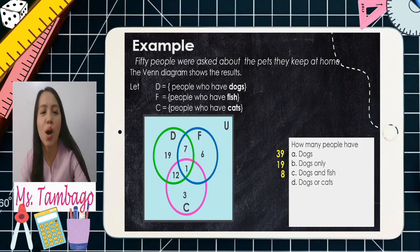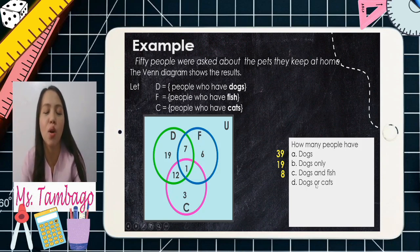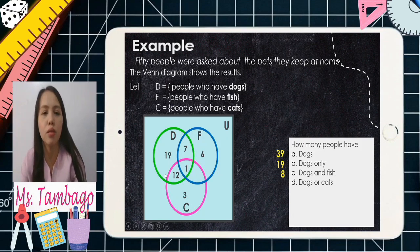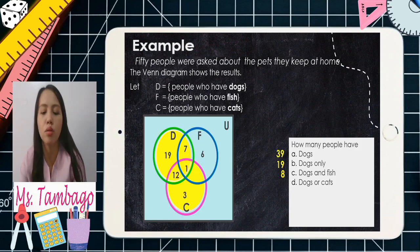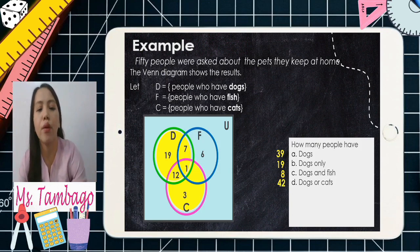Letter D: dogs or cats. The conjunction 'or' means union — all elements. So we include all elements in the green circle (dogs) and all elements in the pink circle (cats). Combining all those numbers gives us 42.